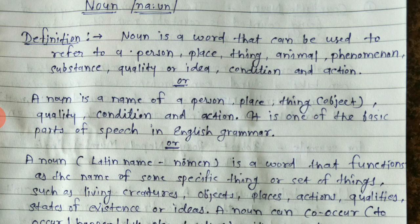For substance: milk, water, oil, juice — any kind of substance. And quality or idea, such as kindness, and also state or condition like childhood, sleeplessness, stress, and action.